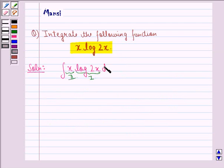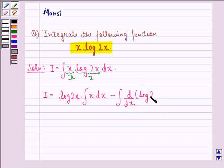Here we will have dx. Let us find this now. We call this I. I will be equal to the first function, log 2x, into integral x dx minus integral d by dx of log 2x into integral of x dx.